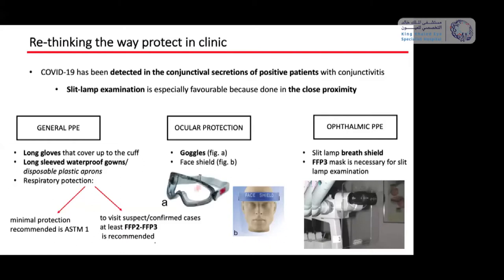Regarding protection in the clinic, we need PPE: gloves, waterproof gowns, aprons, and FFP2 or FFP3 masks. Important for ophthalmologists is using goggles rather than a face shield, because with a face shield we cannot really use the indirect ophthalmoscope. If you need to go to the intensive care unit to see a patient's fundus, goggles are better because they often give you a face shield that you cannot use with the indirect ophthalmoscope.